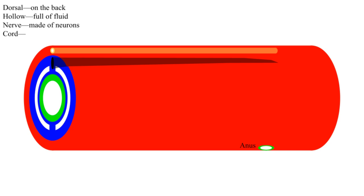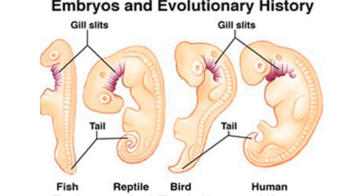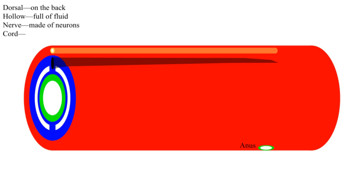A lot of chordate synapomorphies are lost in adult humans, but still clearly present in development. A pharynx, an area just inside the mouth but before the stomach, and that pharynx has slits in it.